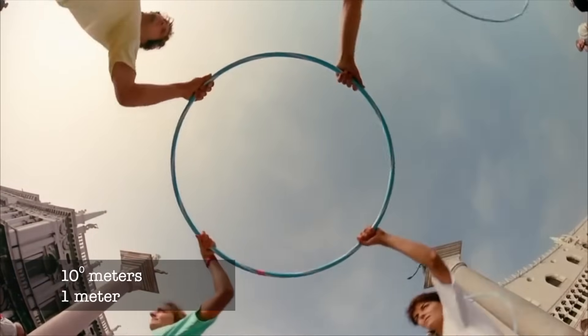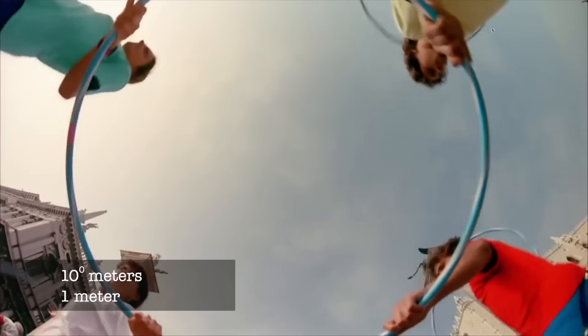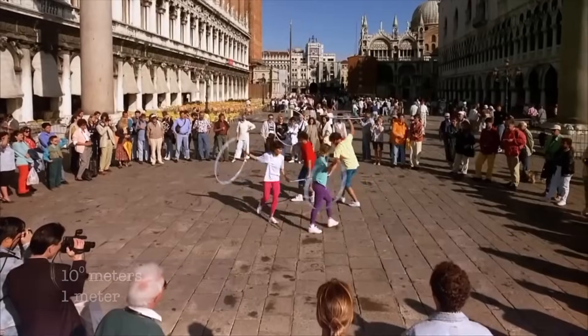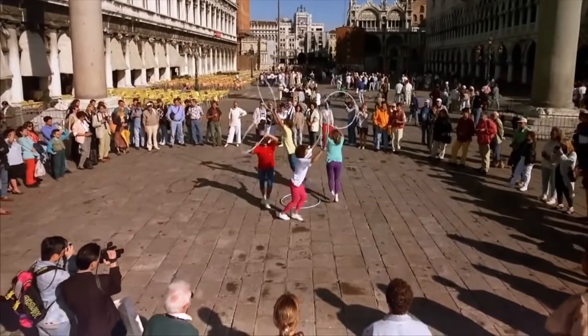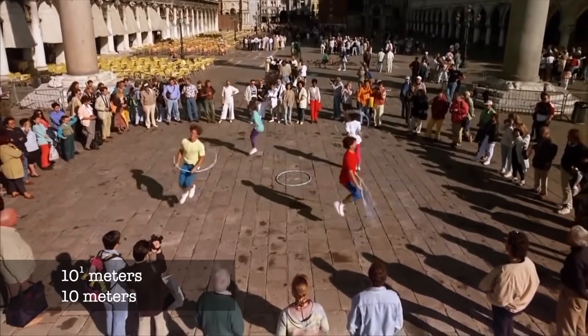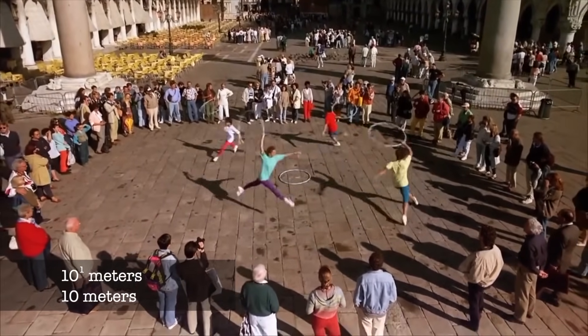The acrobats' ring is one meter wide. The crowd is ten times wider, ten meters across, larger by one power of ten.